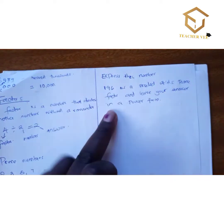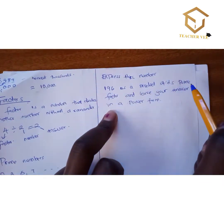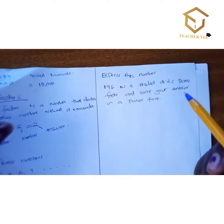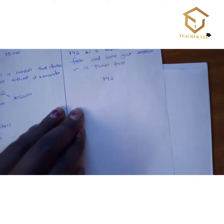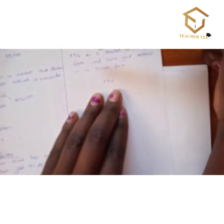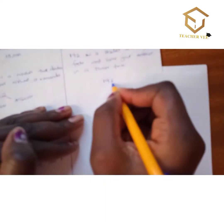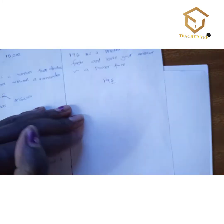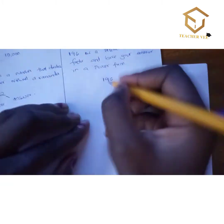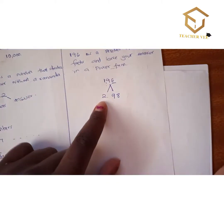The assignment was to express 196 as a product of its prime factors and leave your answer in power form. We write 196 and work with prime numbers. Starting with the smallest prime number divisible into it — that is 2. When you divide 196 by 2 you get 98.